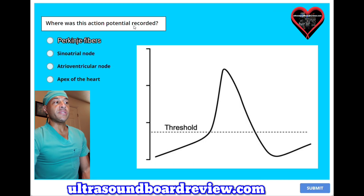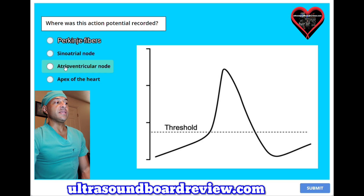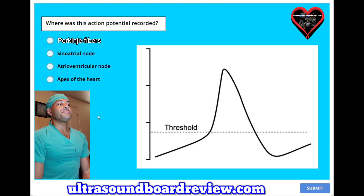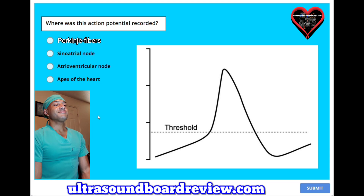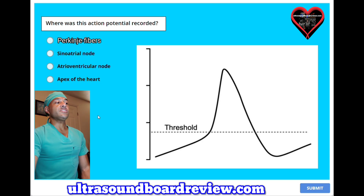Where was this action potential recorded? A. Purkinje fibers. B. Sinoatrial node. C. Atrioventricular node. Or D. Apex of the heart. The answer is B — sinoatrial node.